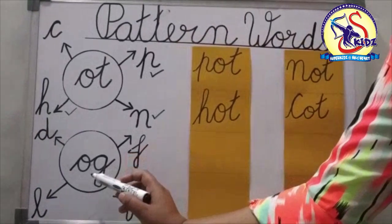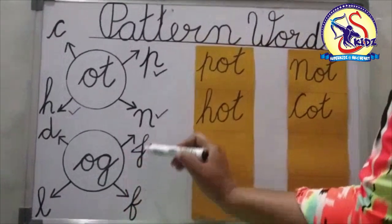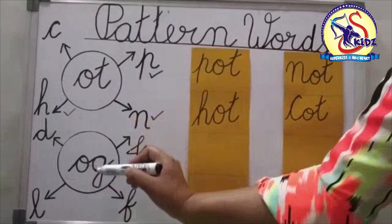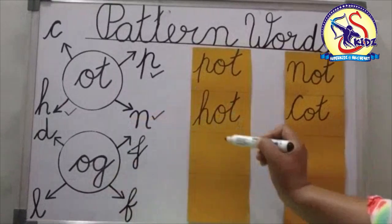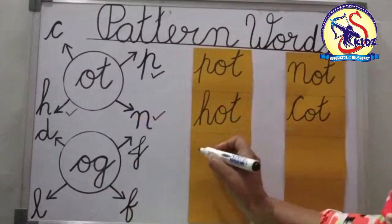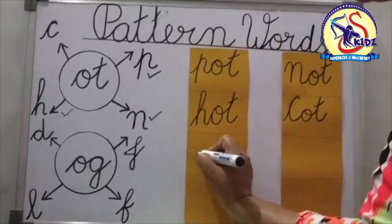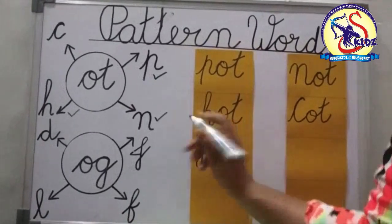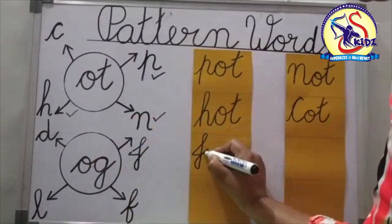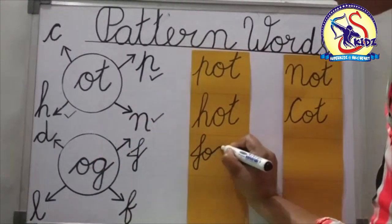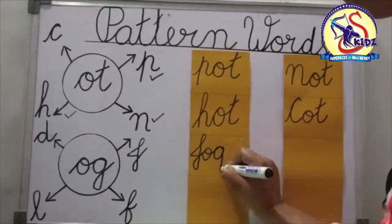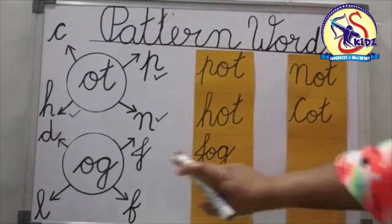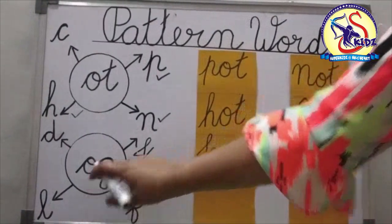Now kids, which pattern is given? O-G, and here are some letters. Again we will write the letters, then we will join the pattern. Now first letter is J, and our pattern is O-G. Now we will get the word J-O-G, jog.